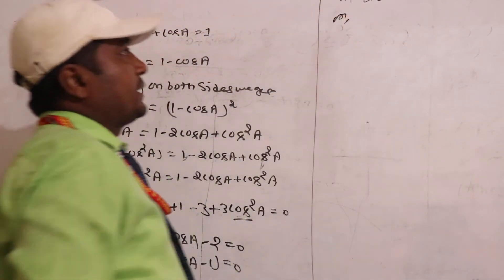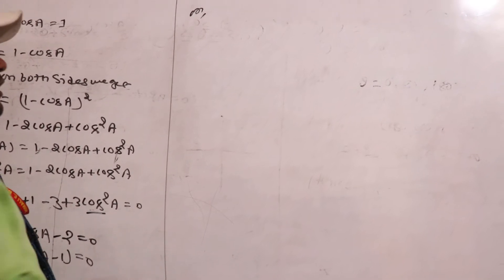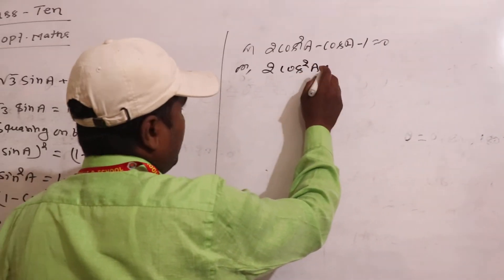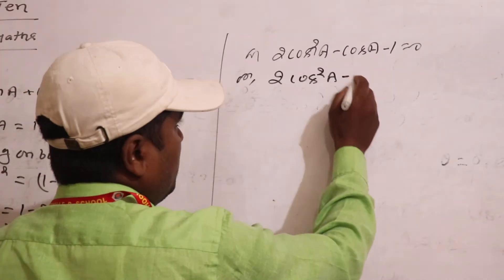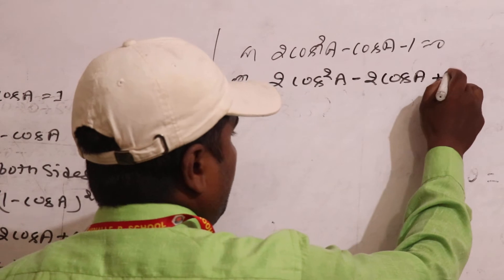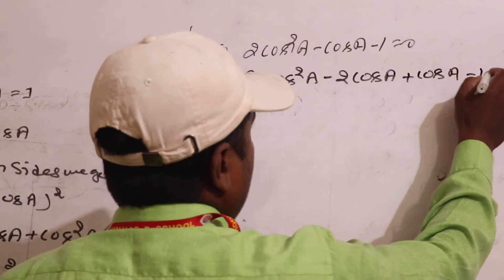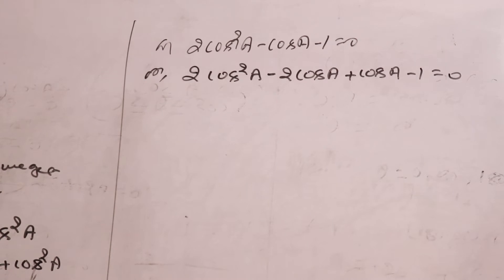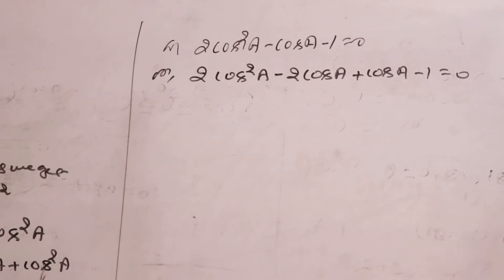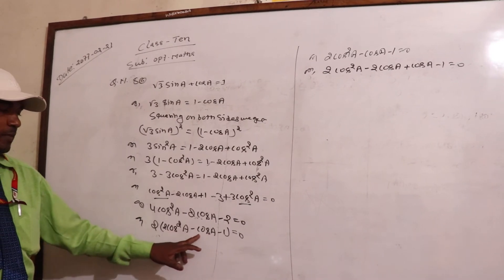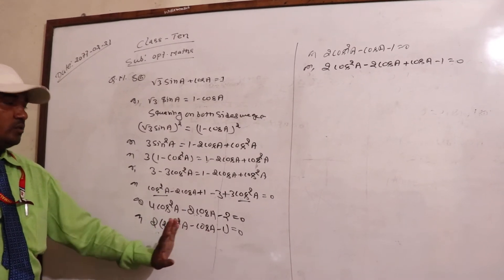Let's factorize. First times last: 2 ones are here. So 2 cos squared A minus 2 cos A, then cos A minus 1 equal to 0. That's what we have. Already: 2 cos squared A minus cos A minus 1 equal to 0.